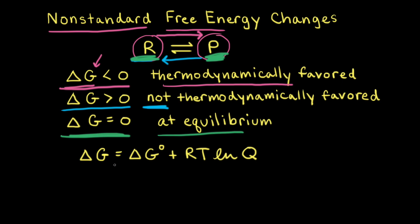Next, let's look at the equation that relates non-standard change in free energy, delta G, to standard change in free energy, delta G naught. Remember, the superscript naught refers to the substances being in their standard states under a pressure of one atmosphere. Delta G, or the non-standard change in free energy, refers to the instantaneous difference in free energy between the reactants and the products. So when that reaction moves to the left or to the right, this value is always changing — it's the driving force for the reaction.